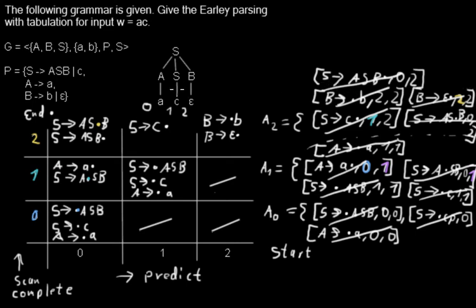Now I look for the goal item. The goal item is one of the start symbol rules in the upper-left cell with the dot at the end. And indeed we have a goal item there — that means the parsing process was successful.